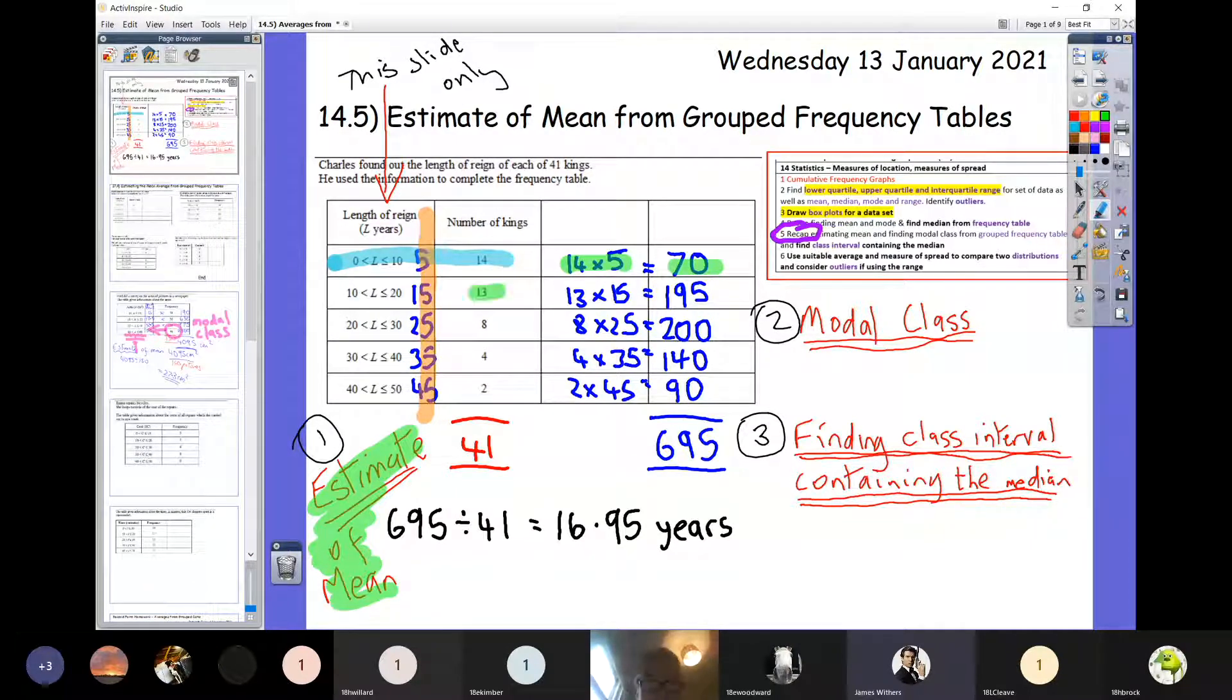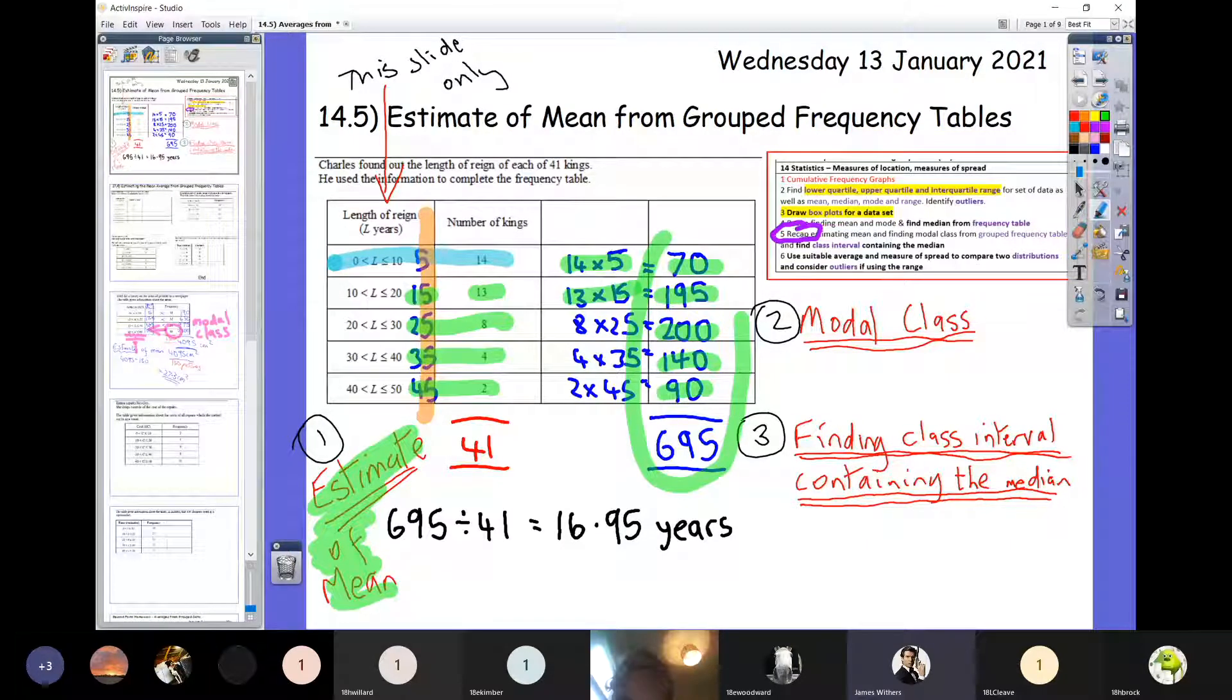We did 13 times 15 to get 195, and then so on. We cross multiply to get all of these subtotals at the ends, and then we add up all of those years. So 70 add 195 add 200 add 140 add 90, that gives us 695 years in total.